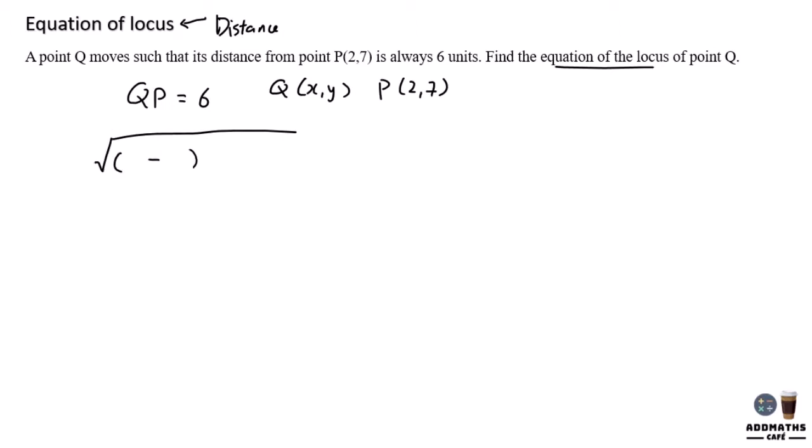So this is the distance formula equal to 6. Your Q is x and your P is 2. Q is y and P is 7. In this case, expand the equation. Bring your square root to the other side. You will have (x - 2)² + (y - 7)² = 6².